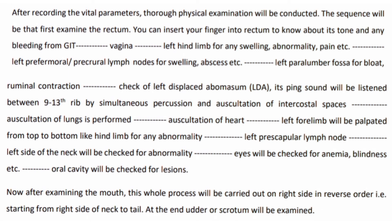After recording the vital parameters, a thorough physical examination will be conducted. Starting from the left side tail: first examine the rectum — insert a finger to check its tone and any bleeding from the GIT. Then examine the vagina, then the left hind limb for swelling, abnormality, or pain. Then check the prefemoral lymph nodes for swelling or abscess. Check the left paralumbar fossa for bloat or ruminal contraction. Check for left displaced abomasum — a ping sound listened between 9th to 13th rib by simultaneous percussion. Then perform auscultation of intercostal spaces, lungs, and heart. Palpate the fall limb from top to bottom for any abnormality.